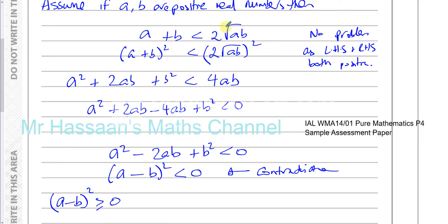We know (A minus B) squared is greater than or equal to zero. If A and B have the same value it could be zero, but that contradicts our assumption that A plus B is less than two times the square root of AB. Assuming the opposite led us to a contradiction that doesn't make sense.